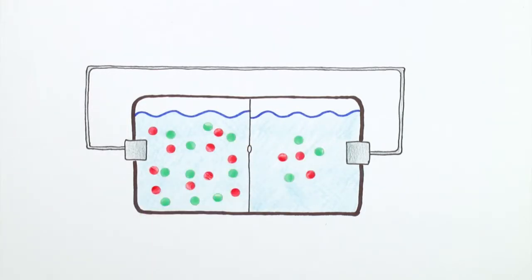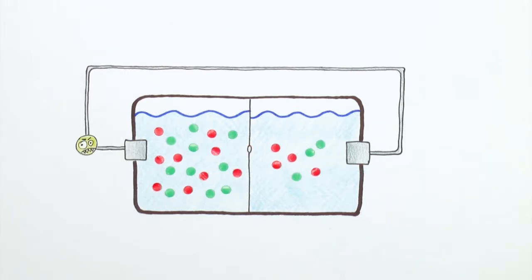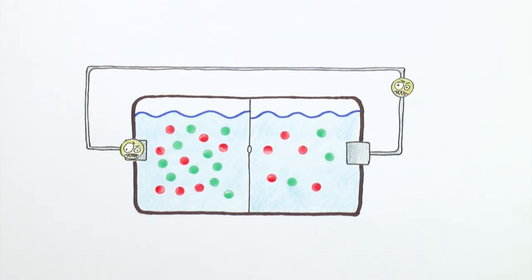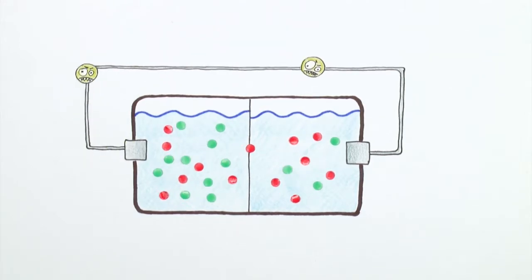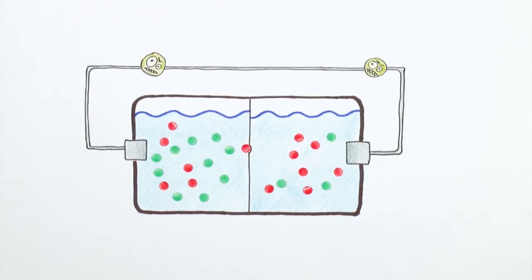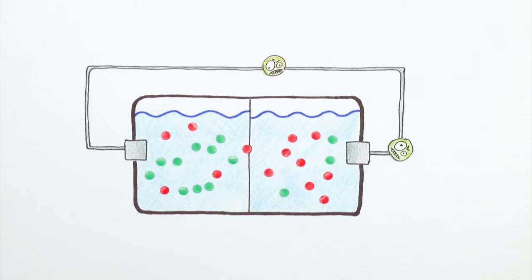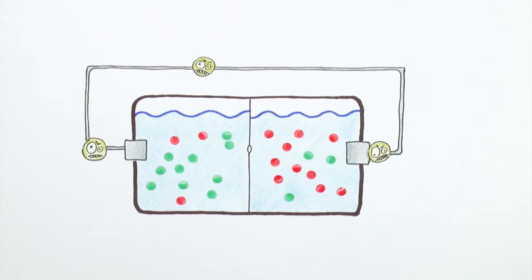In the first compartment, the liquid has a high concentration of ions. The ions cross the membrane to establish equilibrium with the second compartment. For each net ion that passes, an electron is transferred through an electrode, generating an electrical current.